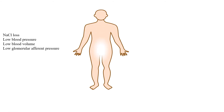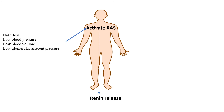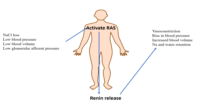What causes the activation of RAS? Loss of sodium, low blood pressure, low blood volume, and low glomerular afferent pressure sensed by the body leads to activation of RAS. This leads to release of renin from the kidney juxtaglomerular cells and production of angiotensin 2. Angiotensin 2 is a vasoactive peptide which leads to vasoconstriction, rise in blood pressure, increase in blood volume, and sodium-water retention. With increasing blood pressure and blood volume, negative feedback minimizes further release of renin.